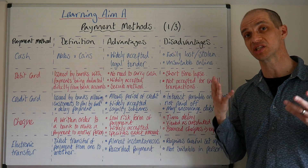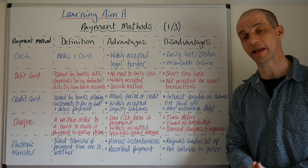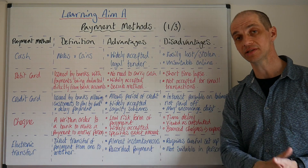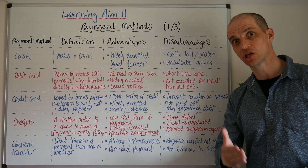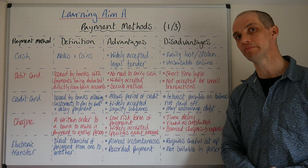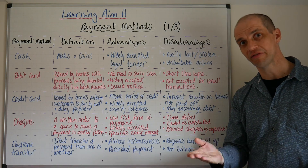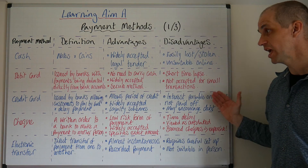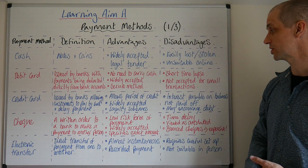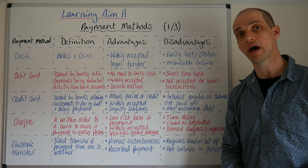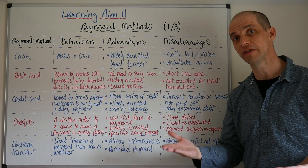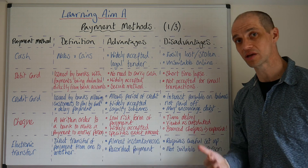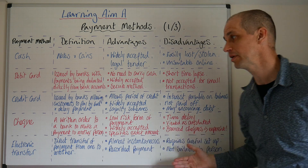Credit cards may encourage debt, and that debt is unsecured, which makes it expensive. A mortgage is secured debt and tends to be a lot cheaper — mortgages can be as low as two percent, whereas here you're looking at 16 to 20 percent. If you've got a four thousand pound credit card limit and a couple of credit cards, it can be very dangerous.